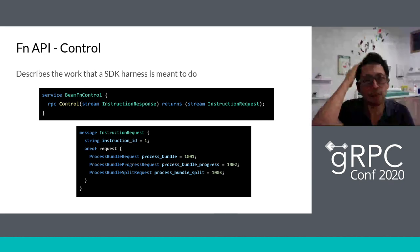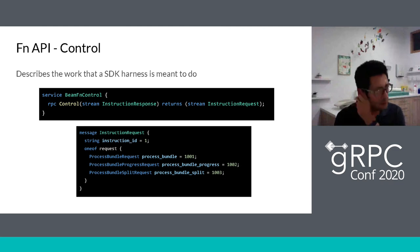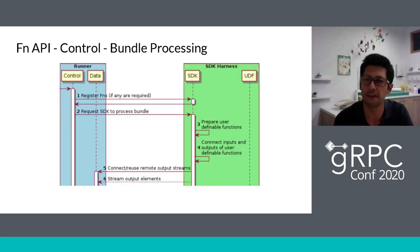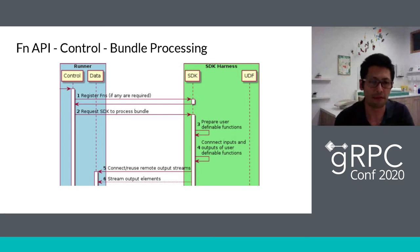How this works: we register the functions, request the SDK to process the function, initialize the functions, start streaming the input elements, process the elements, signal the end, and get the outputs. Finally, there is a logging service — again a bidirectional streaming service — because we want log results as fast as possible. You can see different log levels, timestamps, and messages, similar to any logging system like log4j.